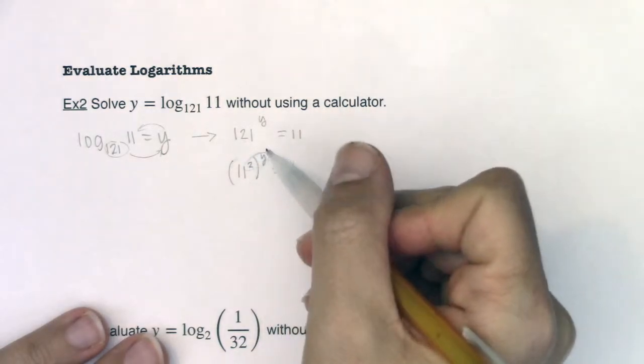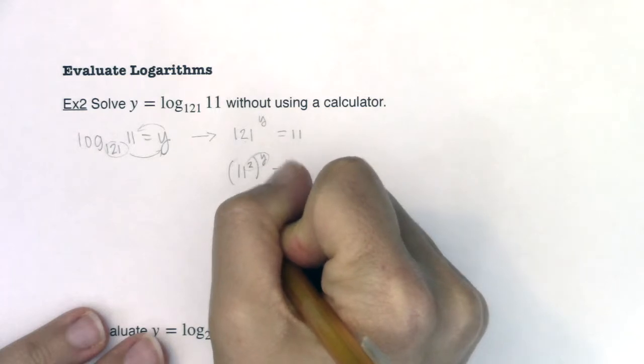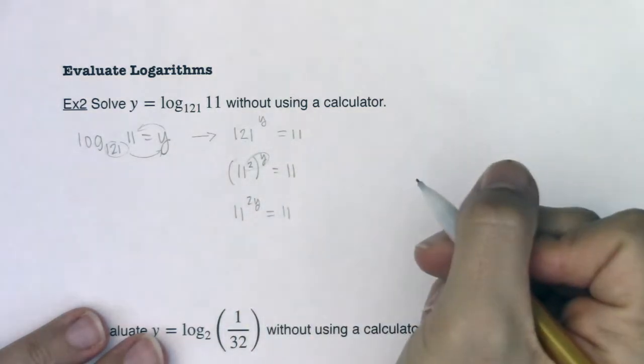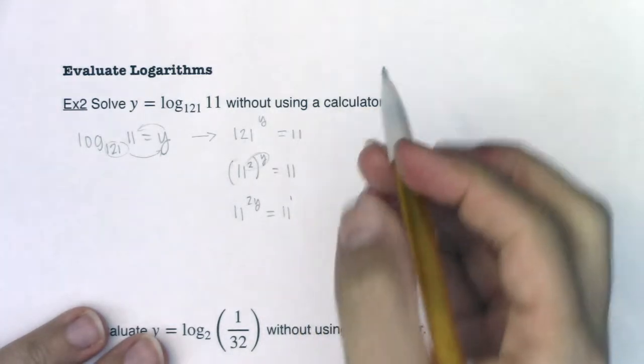So I'm going to rewrite 121 as 11 squared, and now I have a power raised to a power. I'm going to multiply these exponents. So I will get 11 to the 2y, equaling 11 all by itself, but this is really 11 to the first power.